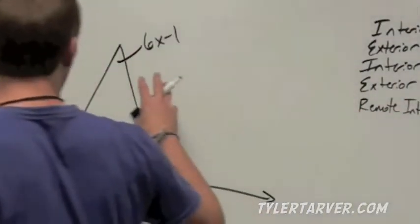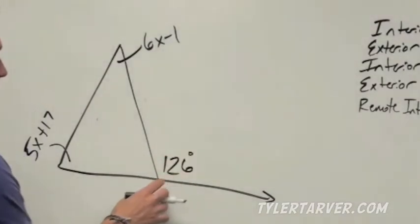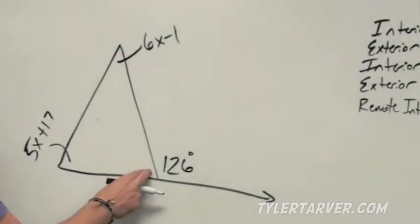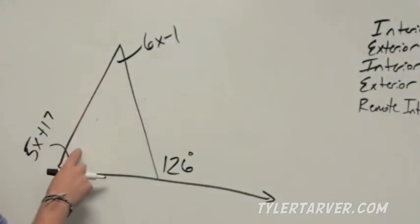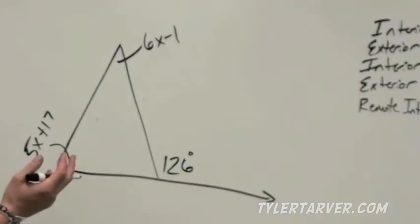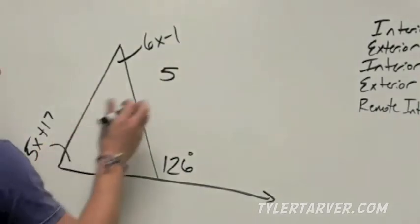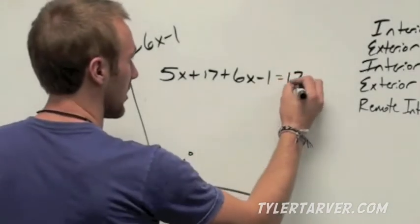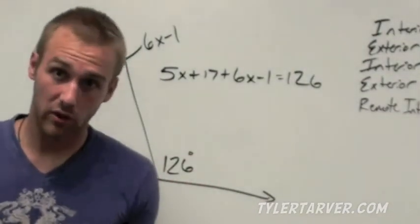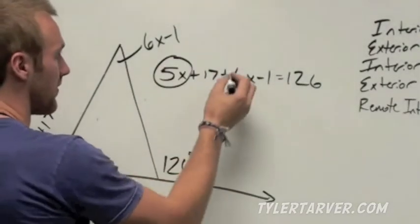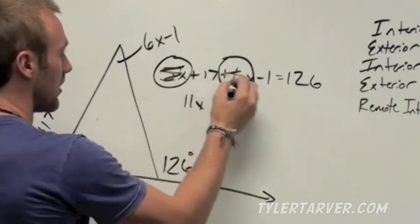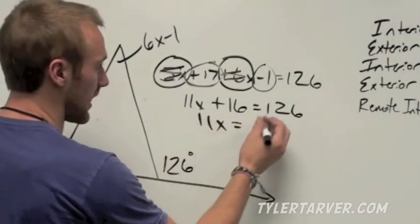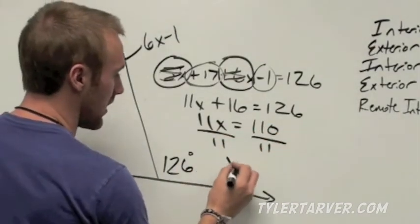Let's do an example. An exterior angle is going to be congruent or equal to the remote interior angles — the two angles that are not touching the exterior angle. So we know these two angles add up to equal this exterior angle. Let's write our equation: 5x plus 17, plus 6x minus 1, equals 126. The geometry is done — we're to the algebra. Combine like terms: 5x and 6x is 11x. Add 17 to negative 1, which is positive 16, equals 126. Subtract 16 from both sides: 11x equals 110. Divide by 11: x equals 10.